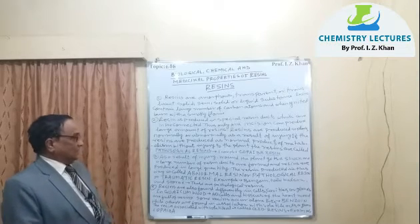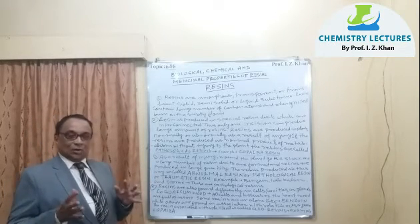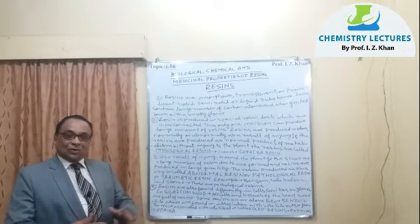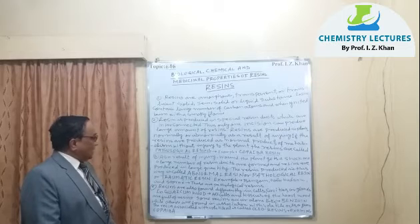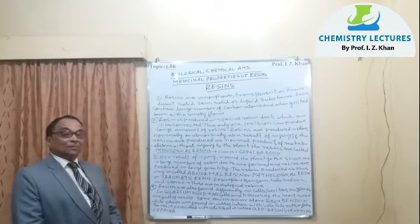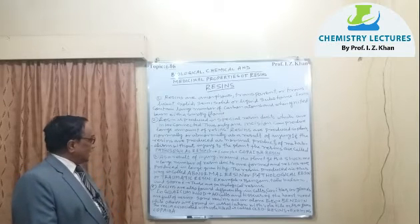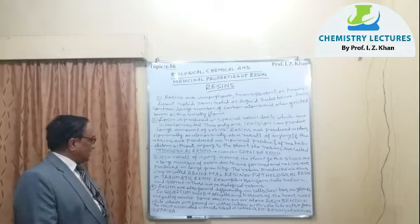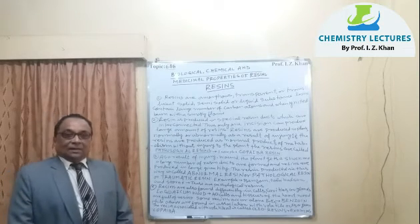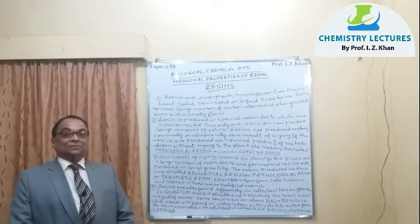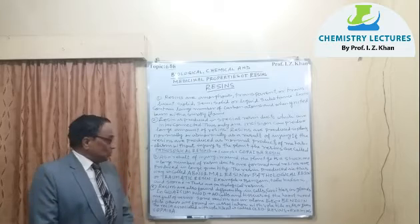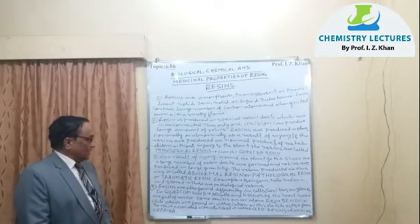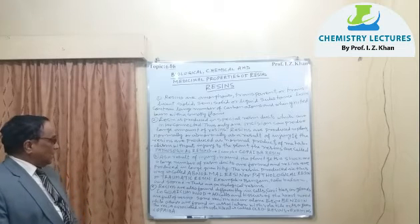As a result of injury or wounding, the plant gets a shock. All the cells and tissues communicate and are in shock, and out of that shock a large quantity of resins are produced — a large number of resin ducts are formed to protect the plant. The resin produced in this way is called abnormal resin, pathological resin, or traumatic resin. Examples are benzoin resin, tolu balsam, and storax — these are pathological resins.